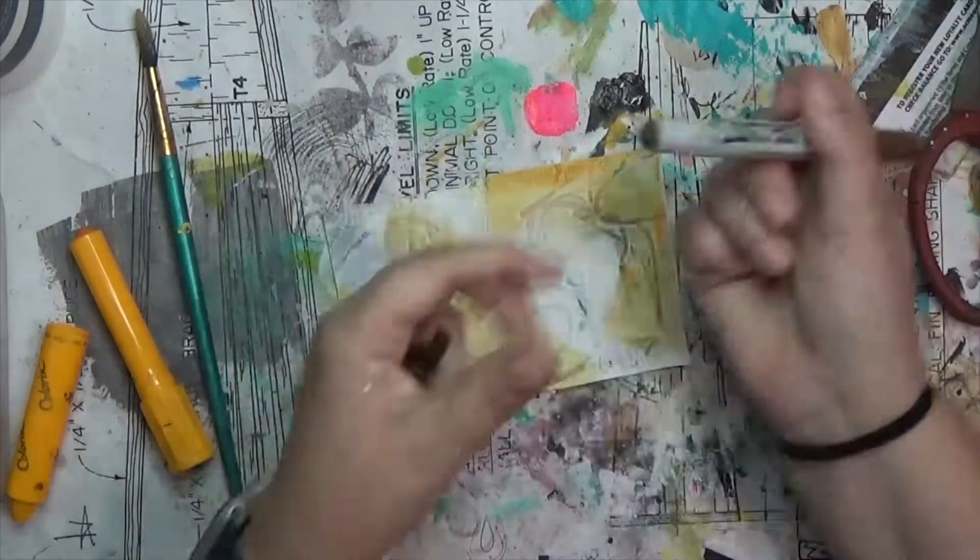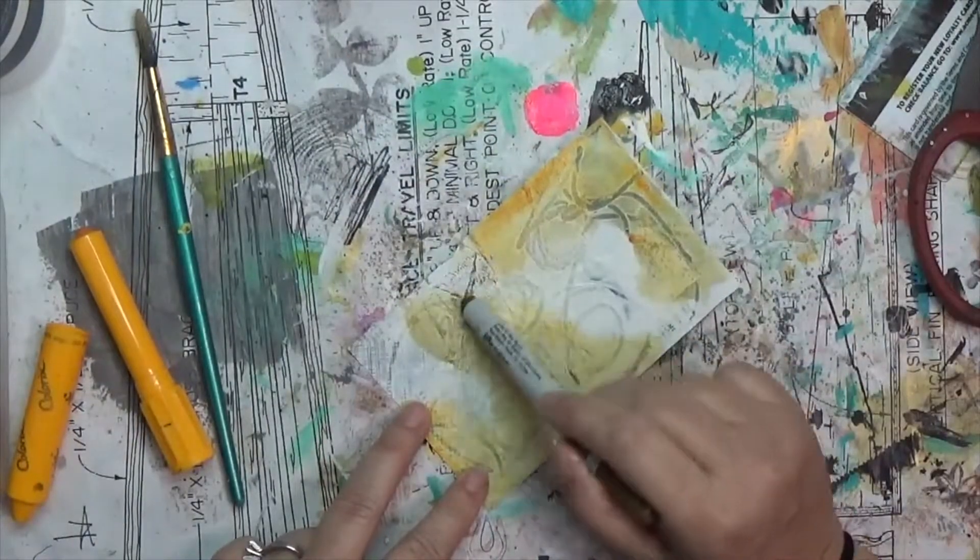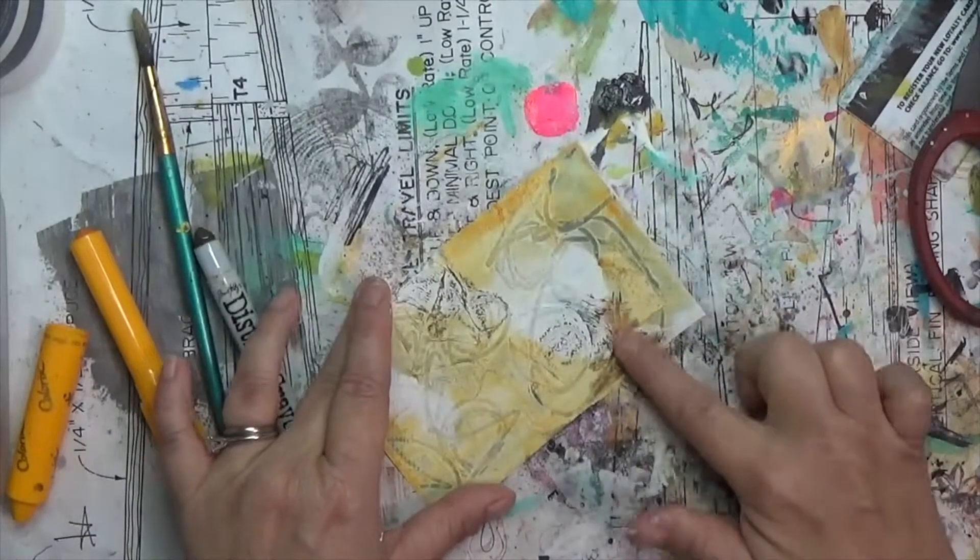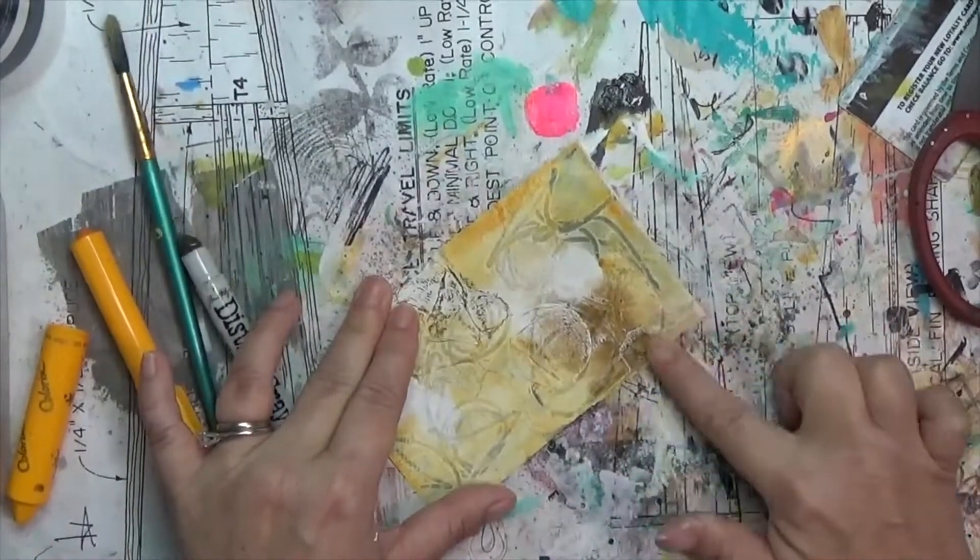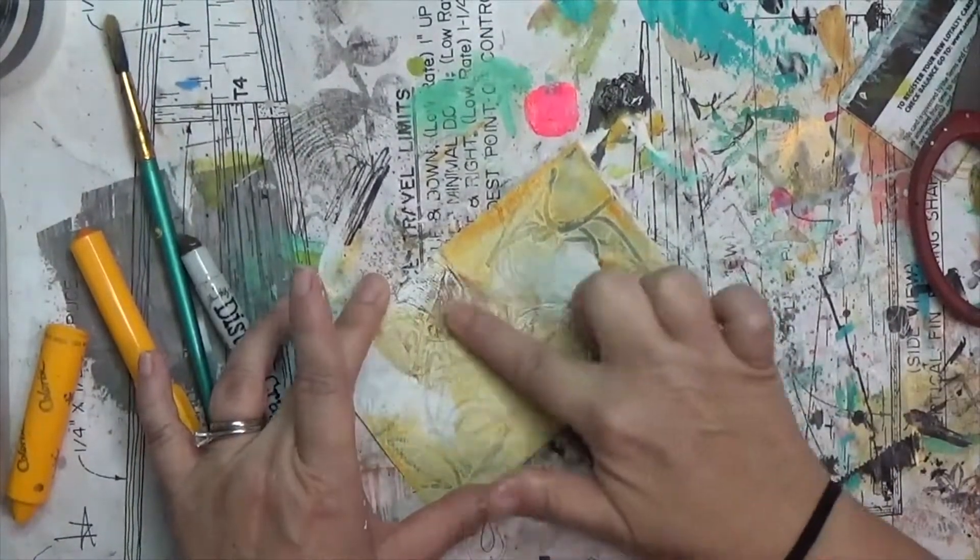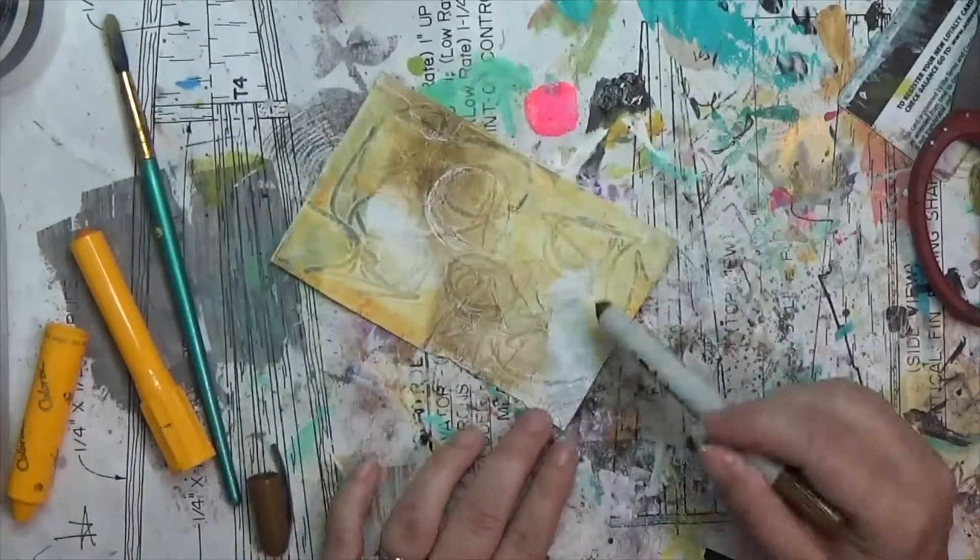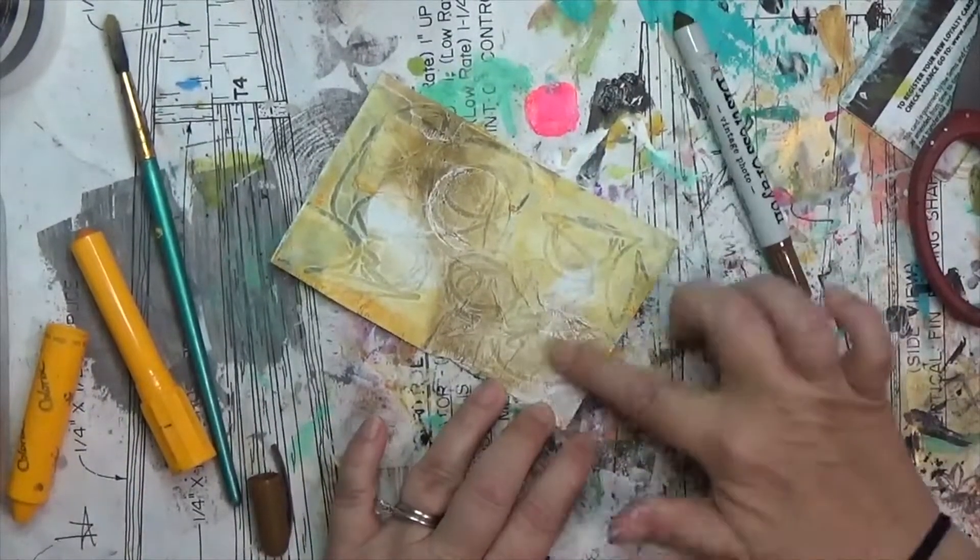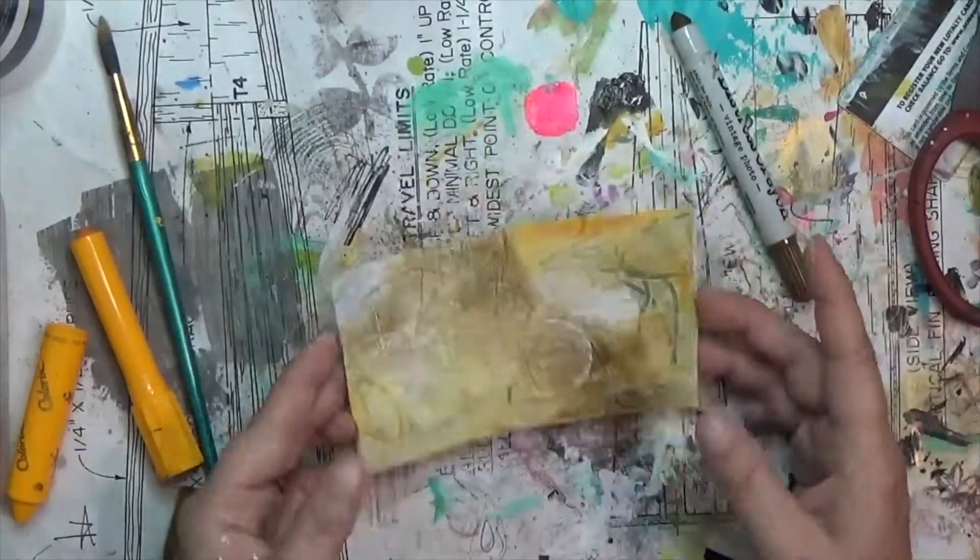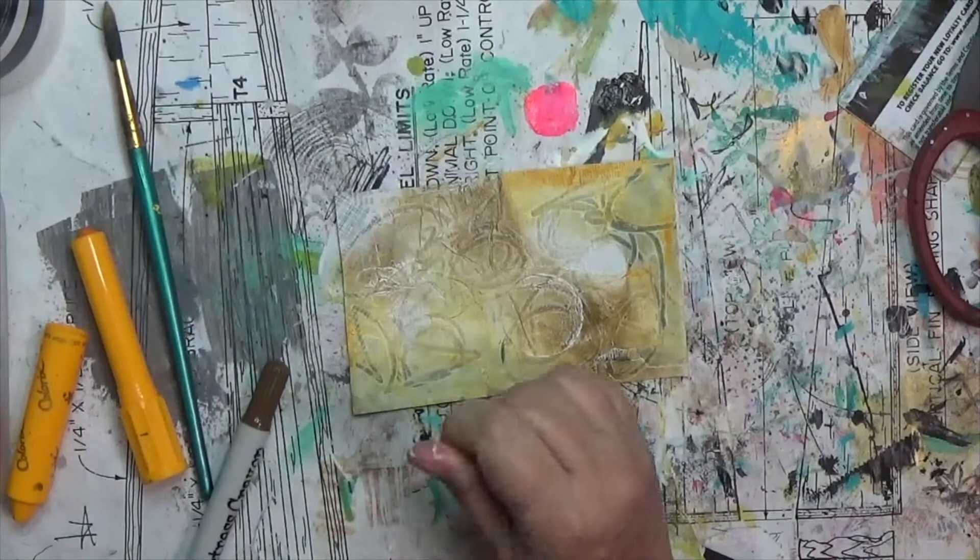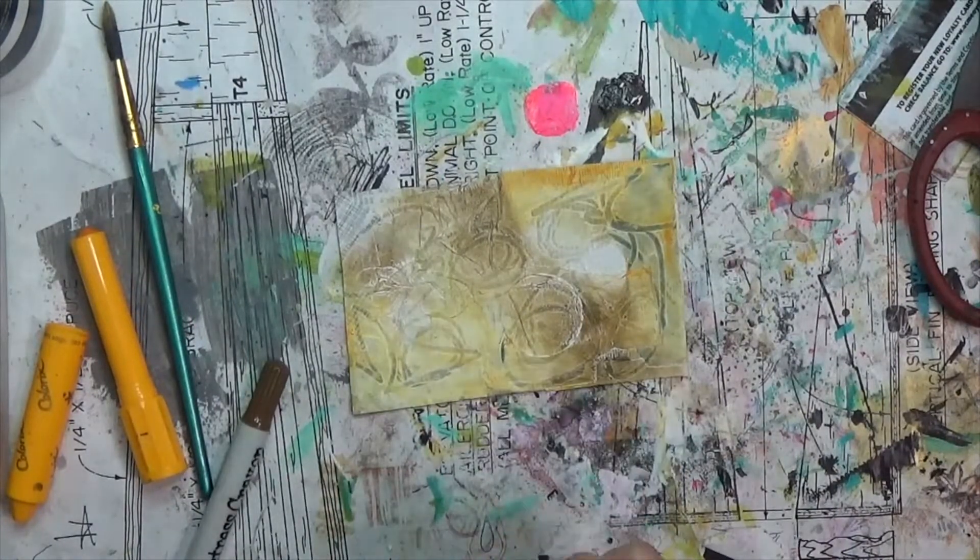And then I start grabbing for my distress crayons from Tim Holtz. This first one is Vintage Photo. The distress crayons come in sets so if I link it, it'll be probably in a set. But with this one, I didn't wet my finger near as much. They are also very soft and move around quite well and I thought that might help pick up some more of that texture if I did it without quite as much water.